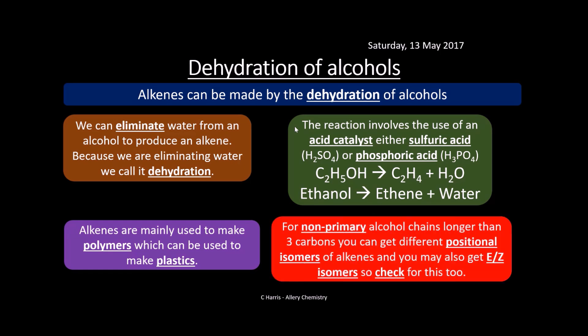For non-primary alcohols with chains longer than three carbons, you can get different positional isomers of alkenes, and you may also get E/Z isomers. Please check whether the alkene you've drawn does have E/Z isomerism. If it does, the question may ask you to name which isomer is formed — is it E or Z? So make sure you check that — it's really important.